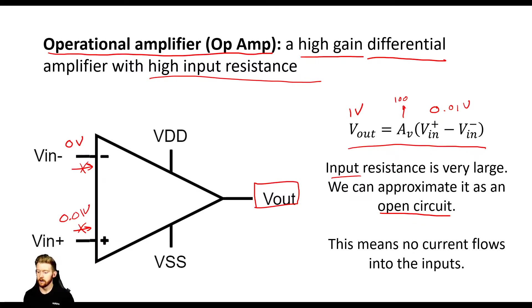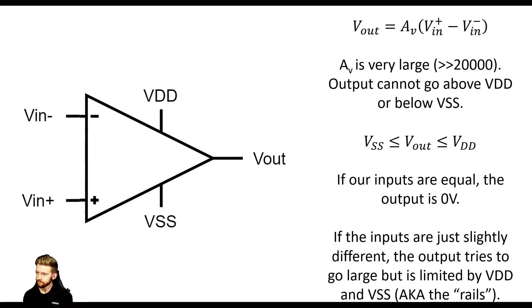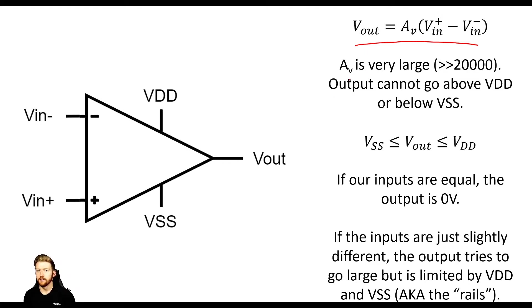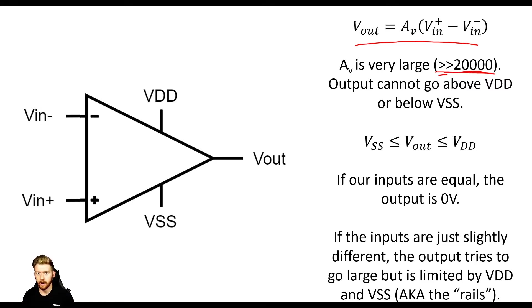Let's talk more about this gain. Vout equals AV times (VN+ minus VN-). This AV is very large — it's built that way in the chip for specific reasons. Usually it's going to be much greater than 20,000. That means if we have a 1 millivolt difference on our inputs, we're going to have a 20 volt signal on the output, amplifying it quite a bit. It has to be much greater than 20,000 to be considered very large.